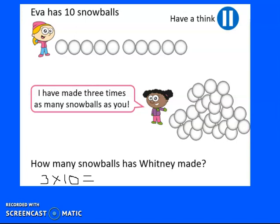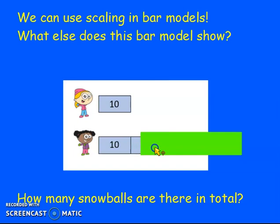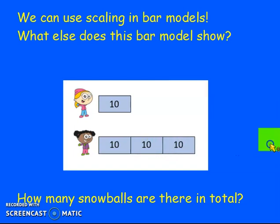Let's move on to the next slide because it's another way of working this out. We can use scaling as bar models. So this bar model shows us how many Ava has. She has 10. And Whitney has 3 times more. So there's 1. There's 2. And there's 3 times more.